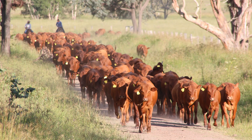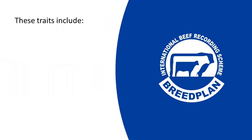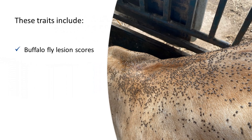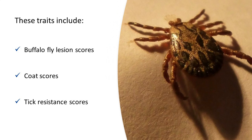There are several other traits for which beef producers can record performance data and submit this to Breedplan. While these traits do not have associated Breedplan EBVs at this time, they are of interest for future EBV development. These traits include buffalo fly lesion scores, coat scores and tick resistance scores.